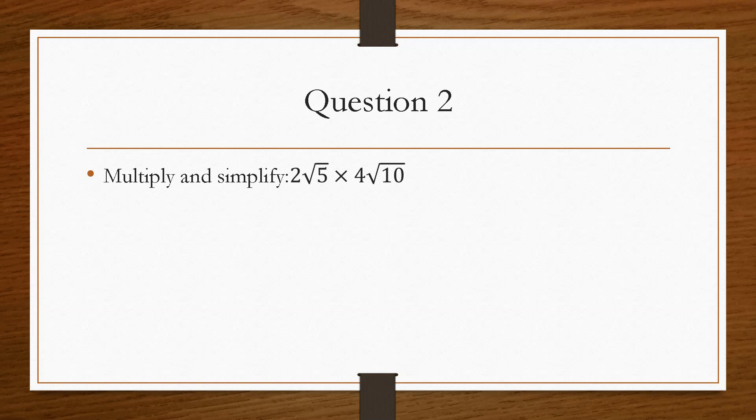Question 2 is pretty much exactly the same, however, this time we have coefficients in front of the square root signs. However, you treat it just like any other question. We multiply the values outside separately to the values inside the square root sign. So I've highlighted the 2 and the 4 in red, which corresponds to where we get the 8. Because we multiply the 2 and the 4, it will give us 8, and then we multiply the same as we did in the previous question, 5 times 10. And that will give us 8√50.